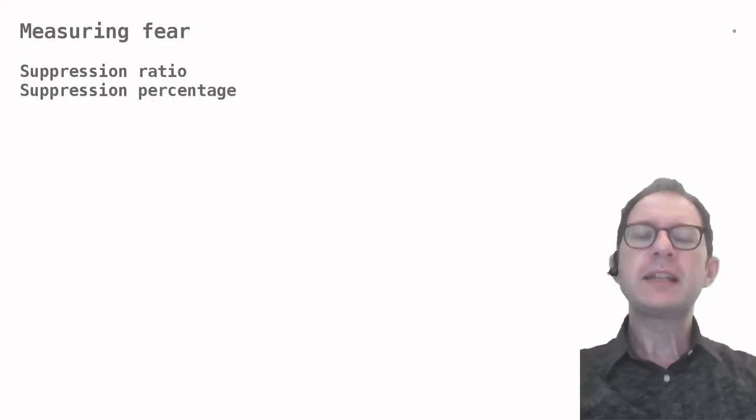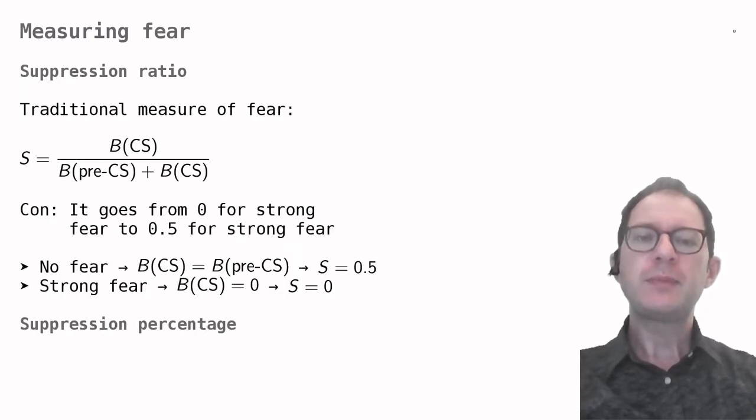But how exactly do we measure this? We want a nice number that we can make graphs of. The traditional measure is called suppression ratio, and it looks like this. It may look scary, but it's not that complicated. B(pre-CS) is how much the animal performs the behavior when the CS is not on. This is indicated as B pre-CS in the formula, because it is usually measured right before the CS comes on.